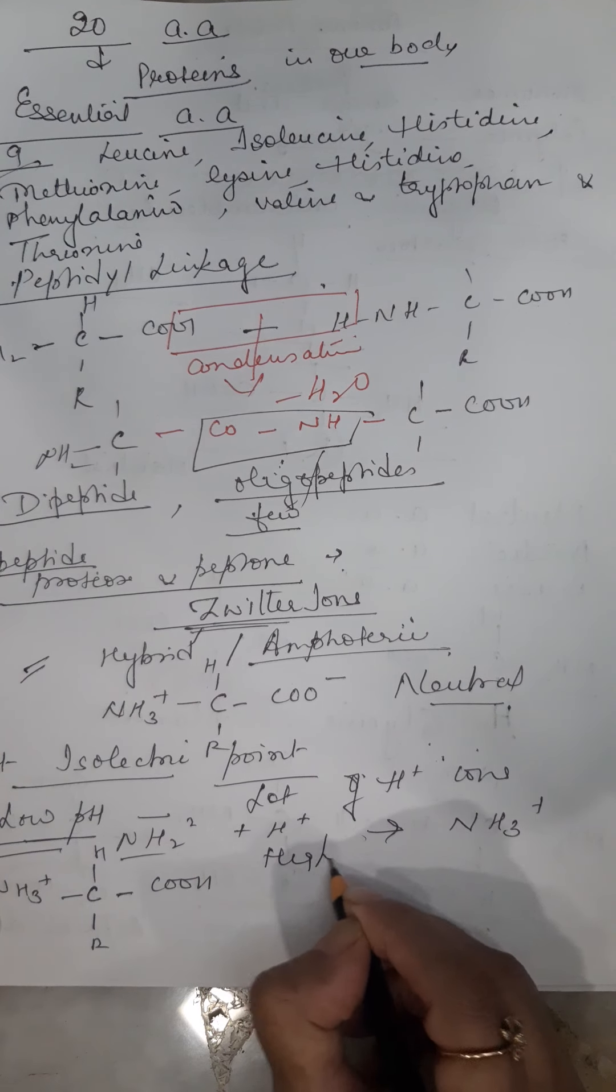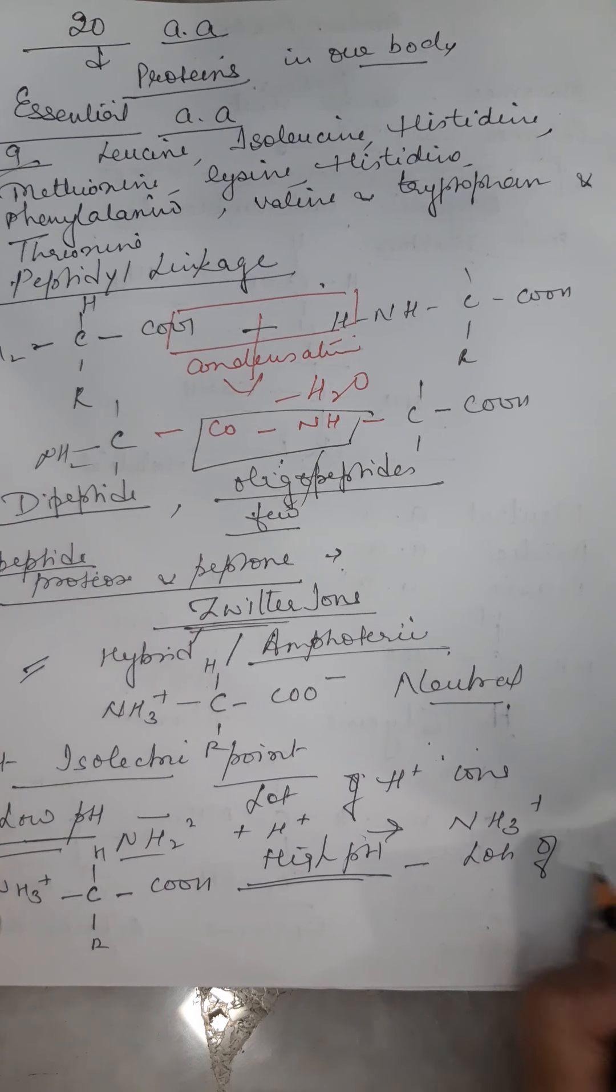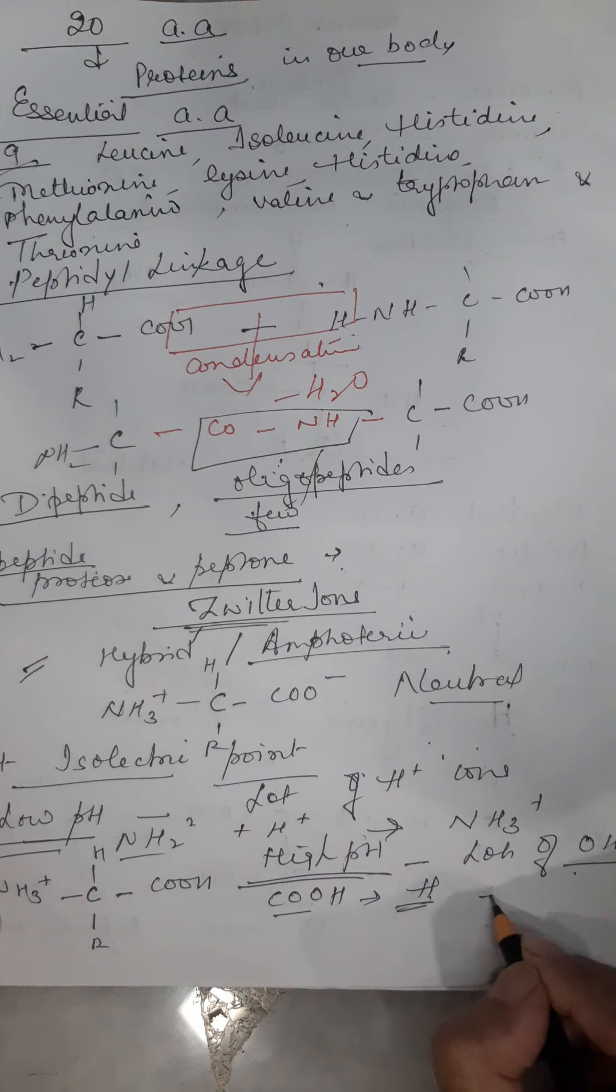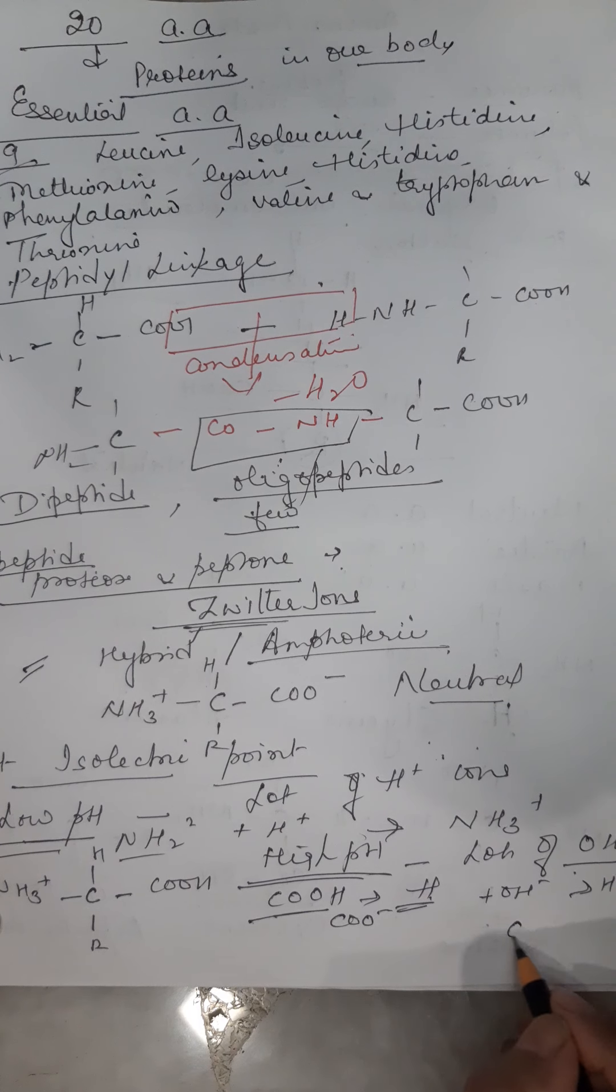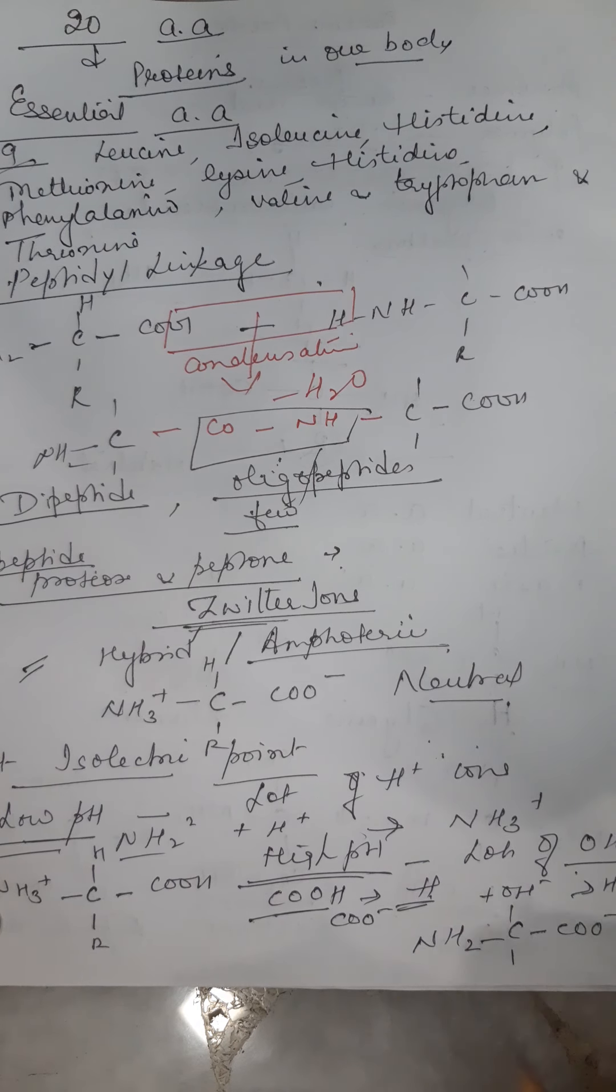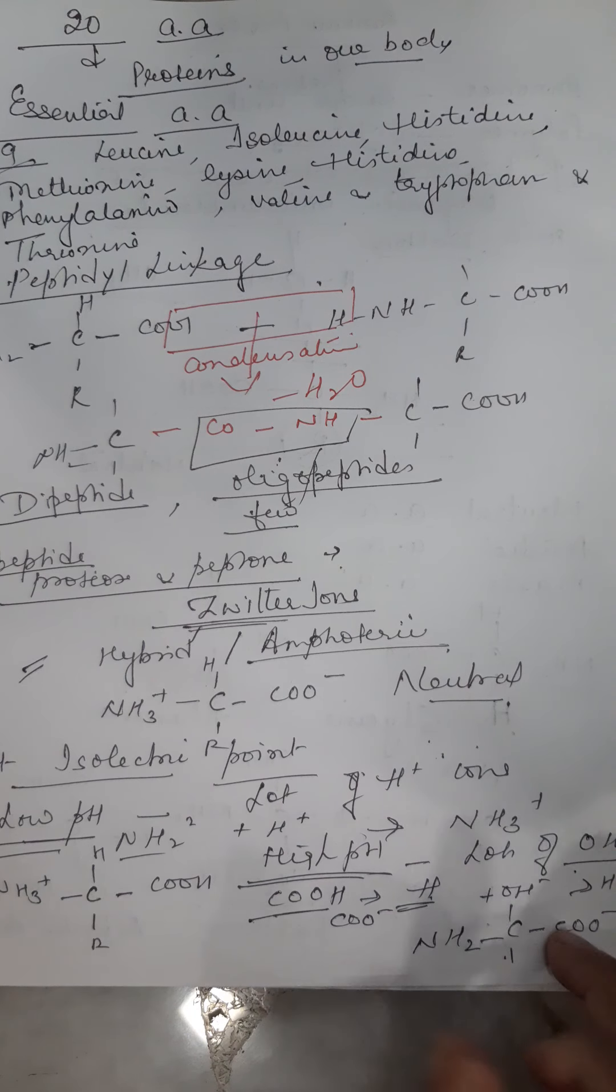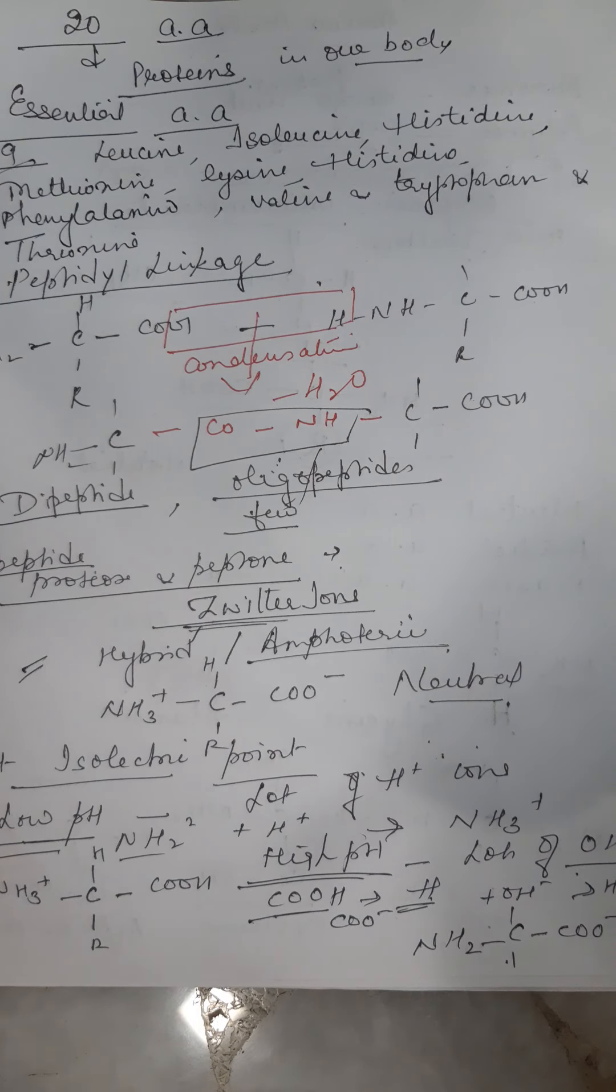On the other hand, when there is high pH, meaning lots of hydroxyl ions, the carboxyl group will give its hydrogen that will combine with hydroxyl to form water. So this will acquire a negative charge. Whether it will exist as negative, positive, or neutral - it all depends on the pH of the solution.